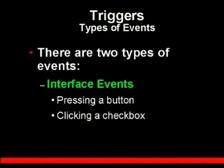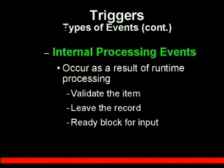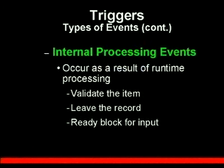There are basically two types of events. An interface event is generally something done by the user — how the user is interfacing with the form, such as pressing a button, clicking a checkbox, or tabbing from one item to another. Then you have internal processing events, which occur as a result of forms runtime processing, like validating a record or leaving the record, or going from creating a block to being set up for inputting new data.